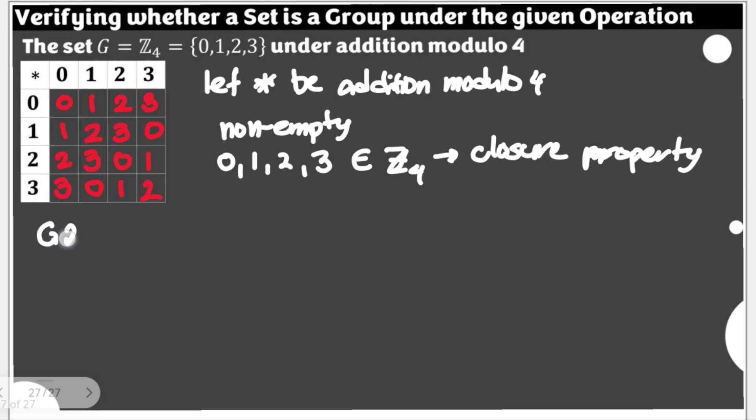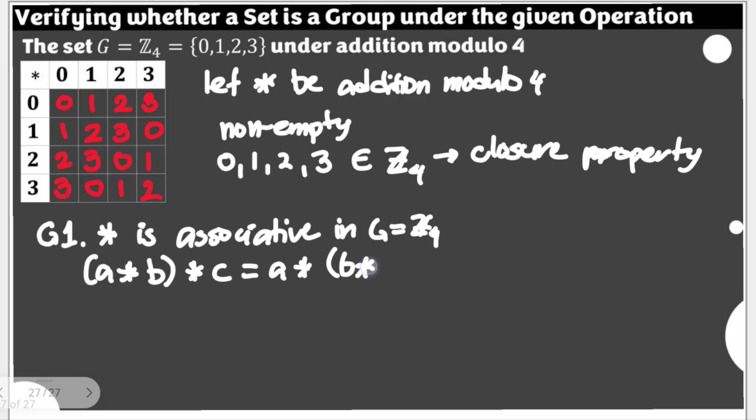Let's start with G1, that's G sub G1. G1 is identification where the star is associative in G, which is equal to Z4. Now, we can actually look into the relationship and pick three elements A, B, and C, such a way that we can satisfy this: A star B star C is equal to A star B star C.